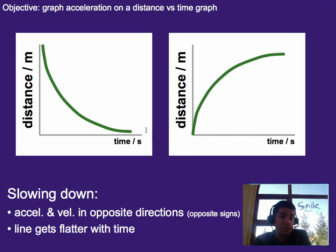Here we've got something that started really steep in the positive direction, so positive slope, and then it flattens out to zero over here. So as lines get flatter with time, that means it's slowing down because the acceleration and velocity are in opposite directions.